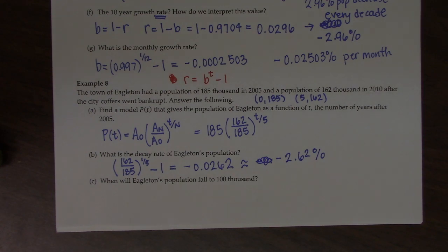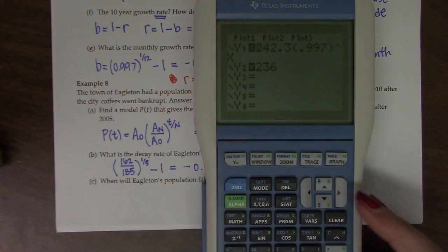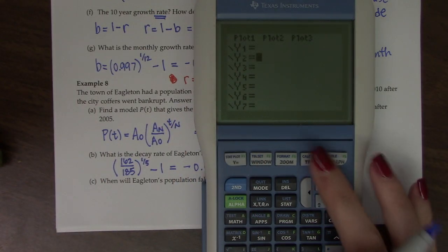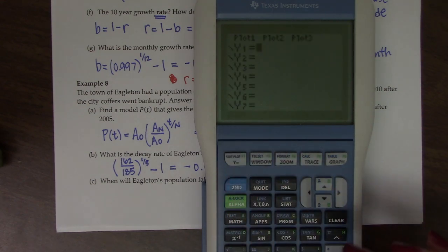When will Eagleton's population fall to 100,000? So we can do this by setting our model equal to 100 and finding the intersection. So if I go into my calculator, I'm going to put the model in.